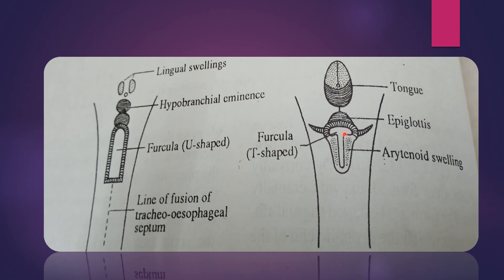So the U-shaped furcula is now changed into a T-shaped slit. After that, the furcula proliferates and this proliferation is going to close the slit. After the third month, it gets recanalized. The arytenoid swelling then differentiates into an upper part and a lower part. The upper part is going to form the arytenoid cartilage and the corniculate cartilage, and the lower part is going to form the cricoid cartilage.